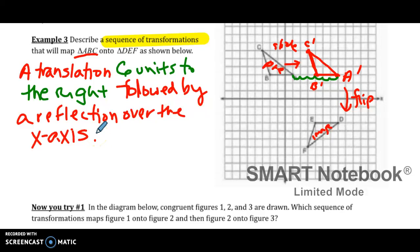So it says to describe. So description can be in words. You don't have to write a rule for it. It didn't say write a rule in function notation. It didn't say write a rule in composition notation. So if it just says describe, you can just write a written description of what happened. But I have to say what came first followed by what happened second.